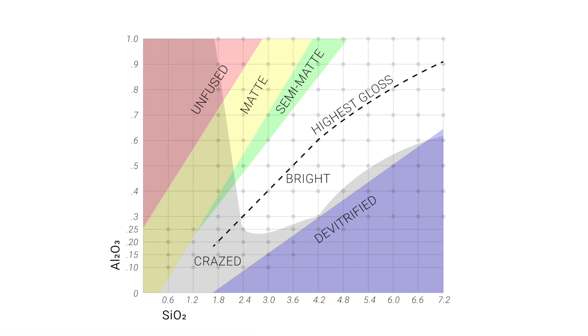Glazes that fall within the de-vitrified and unfused region are immature or not fully melted. Glazes that fall within the crazed region are possibly crazed. Glazes that fall within the bright region are glossy and bright. The semi-matte region contains glazes that are satin or matte, and the matte region contains matte glazes.